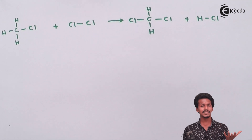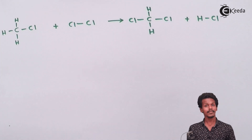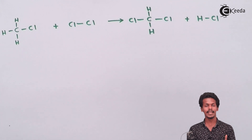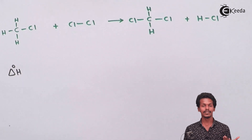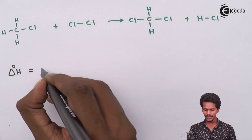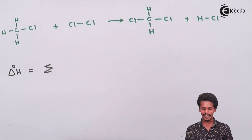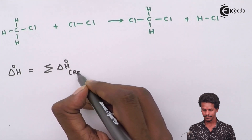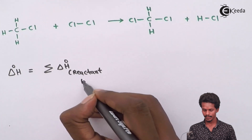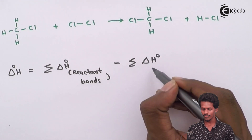The formula we use is: ΔH_reaction = Σ ΔH°(reactant bonds) − Σ ΔH°(product bonds). Since we are calculating bond enthalpies, we apply this relation — the sum of bond enthalpies of bonds broken in reactants minus the sum of bond enthalpies of bonds formed in products.